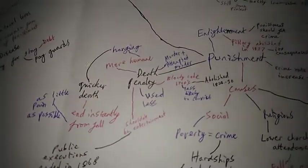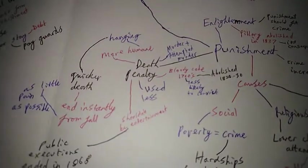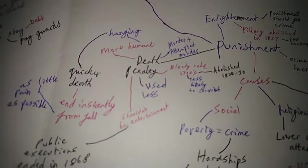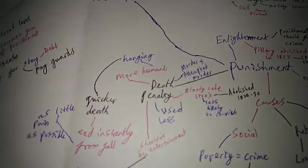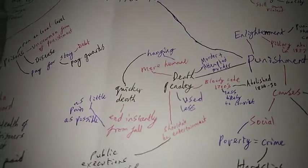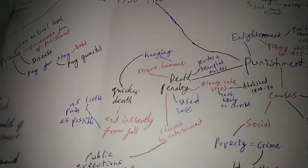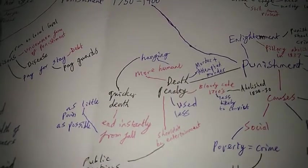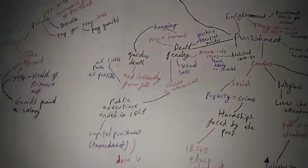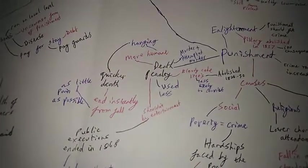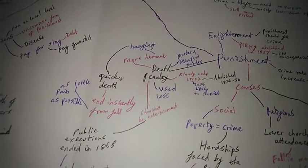The death penalty was used for murder and attempted murder. In this time they tried to make it more humane by using hanging as it gave a quicker death, the end of life was instant from the fall which causes as little pain as possible to these people. In this time they decided we should be nicer to people technically. So it was used a lot less.